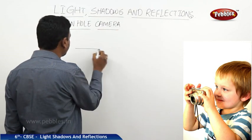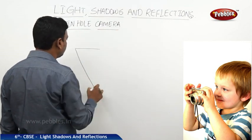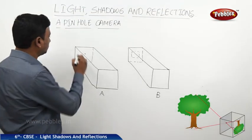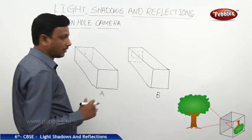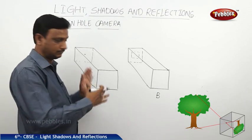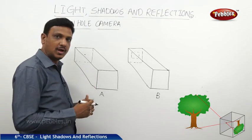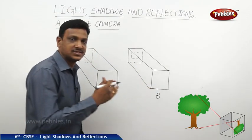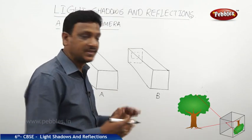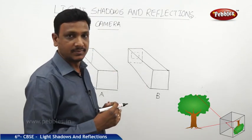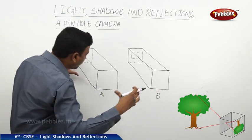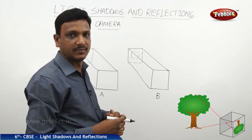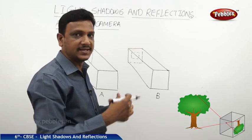You need to take a cardboard box. Here we have taken a rectangular, hollow cardboard box. We have taken one more cardboard box which is smaller in size — the smaller one fits into the bigger one. When you fix the smaller one in the bigger one, there should be no gap; it should be tight, so that no light enters into the box.